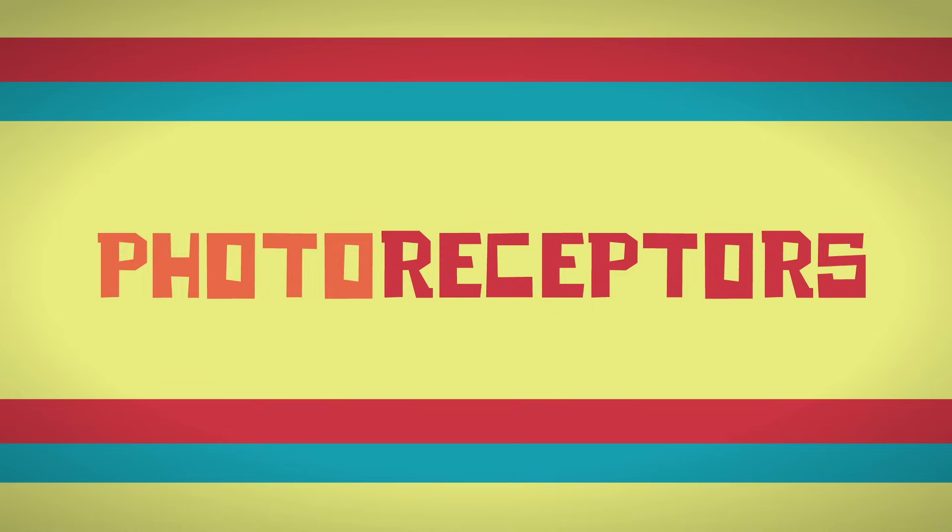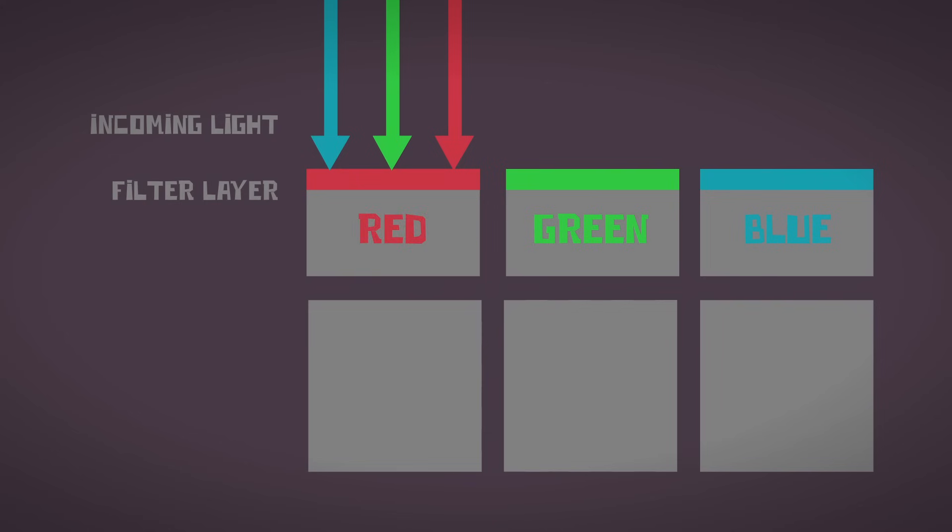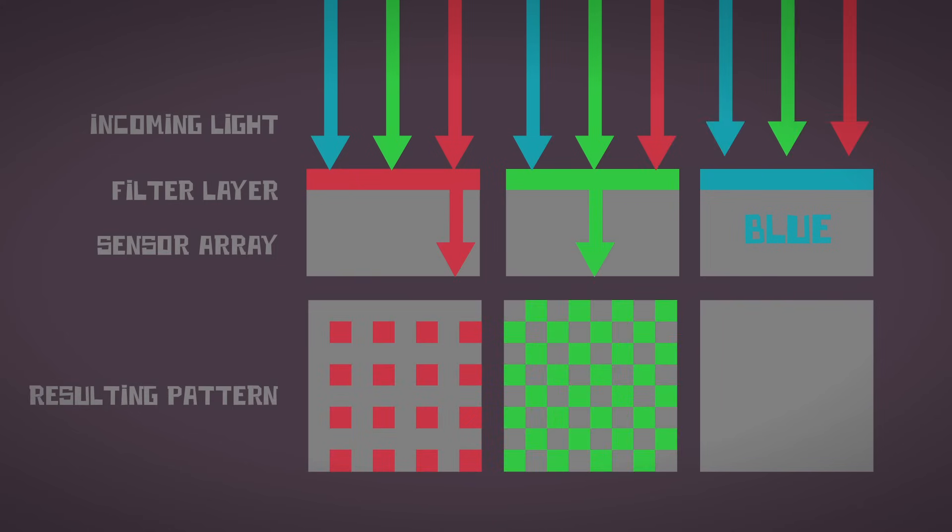Photoreceptors. The light-sensitive surface in a camera only has one kind of photoreceptor that is evenly distributed throughout the focusing surface. An array of red, green, and blue filters on top of these photoreceptors causes them to respond selectively to long, medium, and short wavelength light.